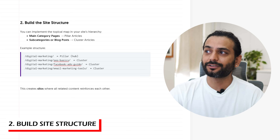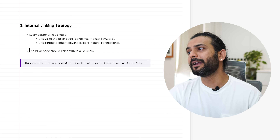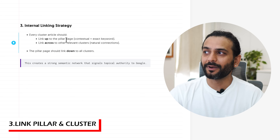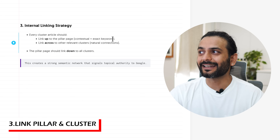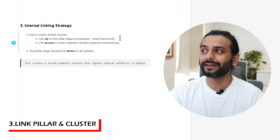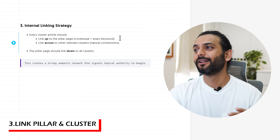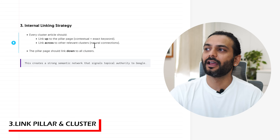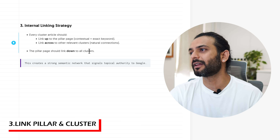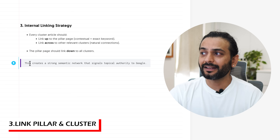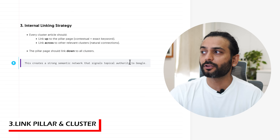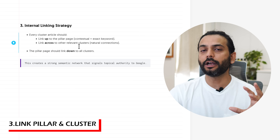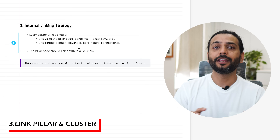You can use categories as pillar content and blog posts or subcategories as cluster content. This creates silos where all written content reinforces each other, which is really important. Third, the internal linking strategy: every cluster article should link up to the pillar page using contextual, exact-keyword anchor text. Make sure it makes sense — do not force links. Link across relevant clusters where there's a natural connection, and pillar pages should also link down to cluster content. This creates a strong cementing network that signals topic authority to Google.